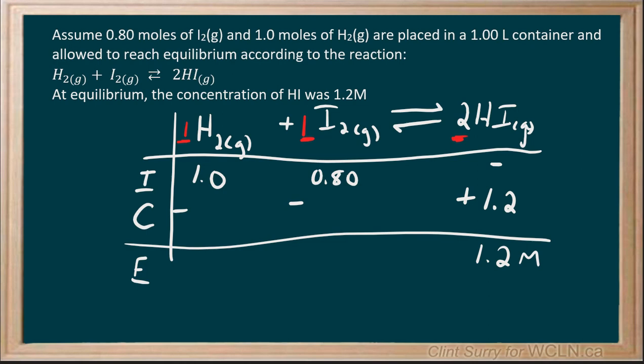Whatever the change is that happens to hydrogen is the same change that happens to iodine, and you double that to get the hydrogen iodide change. The change is always based on the stoichiometric ratio of your balanced equation.